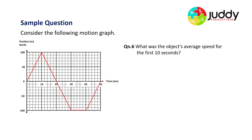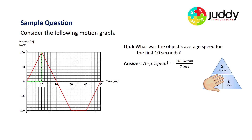Question six: what was the object's average speed for the first 10 seconds? Average speed equals distance over time, which is also the gradient, rise over run. In the first 10 seconds we started at zero and rose 100 meters over a run of 10 seconds. So 100 divided by 10 gives an average speed of 10 meters per second for the first 10 seconds of motion.